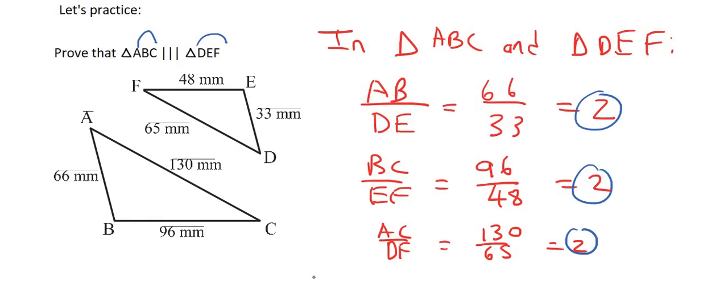But what would our reason be? Well you would first say therefore triangle ABC is similar to triangle DEF. Why? Because the corresponding sides are in proportion. So you say corresponding like that. Sides are in proportion like that.